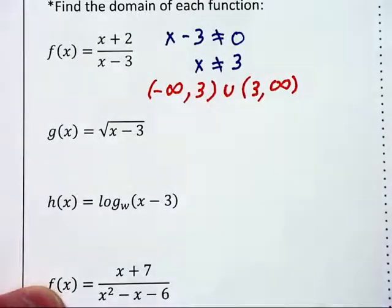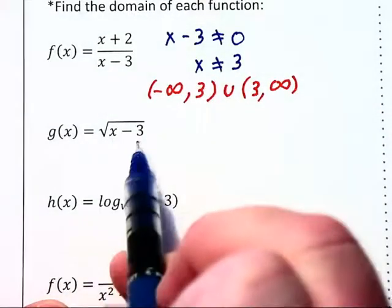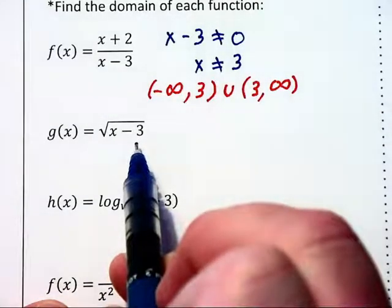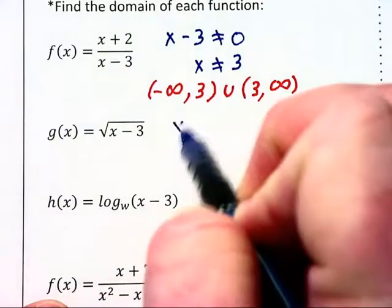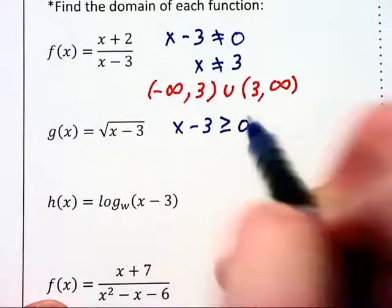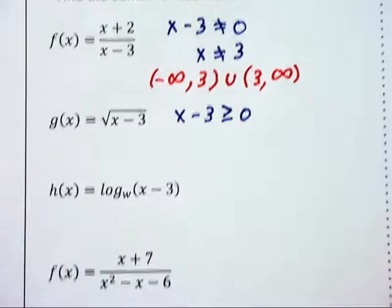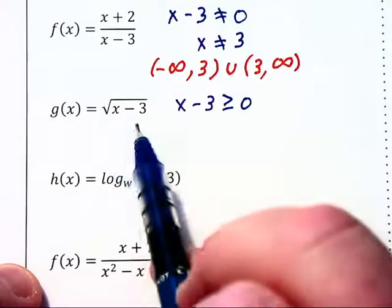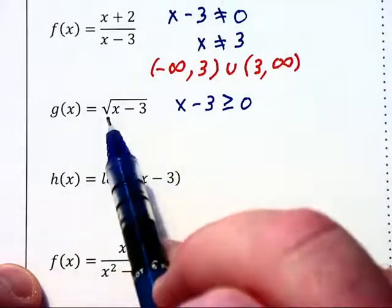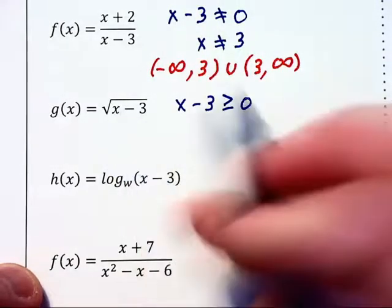In this second case, x minus 3 is inside of a square root, and we're not allowed to have the square root of a negative. Therefore, x minus 3 must be greater than or equal to zero. The insides of the radicand may be zero and may be positive, but may not be negative.